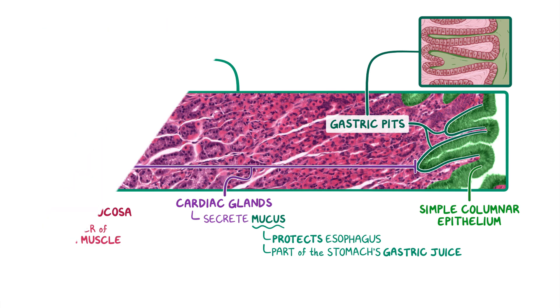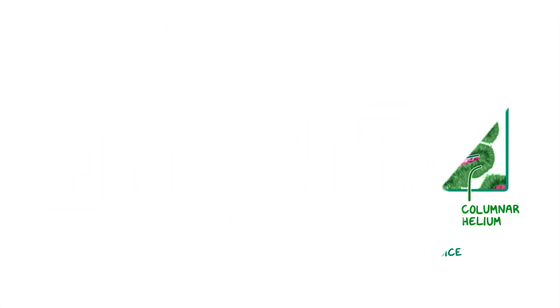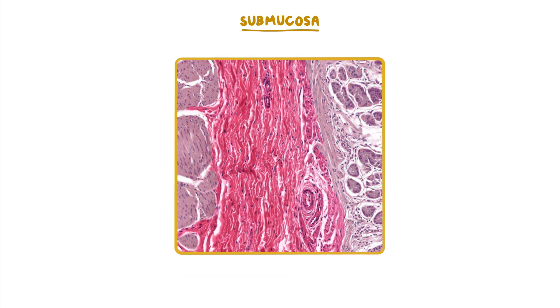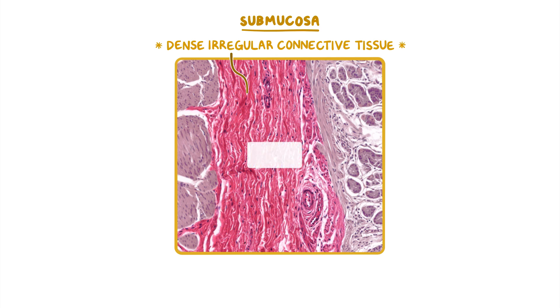The next main layer of the cardia is the submucosa, which consists mostly of dense irregular connective tissue but also contains larger blood vessels like the ones visible in this image.